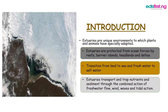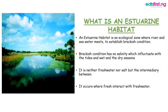Estuaries transport and trap nutrients during this movement through the combined action of freshwater flow, wind, waves, and tidal action. Now let's look at what an estuarine habitat is.